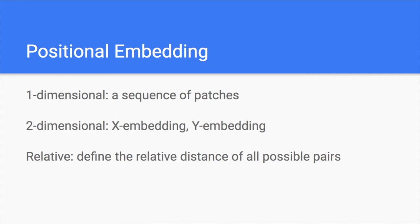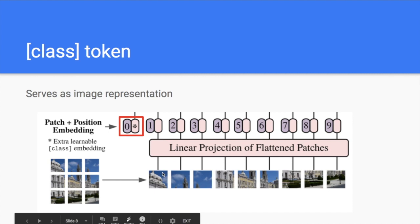Another important component is positional embedding. If you don't put position information into your patches, you won't know where each small image block is actually located in the whole image — it could be in the middle, on the bottom right, but actually it's on the top left. If you don't know the relative relations, you won't be able to assemble the full picture of the original image.